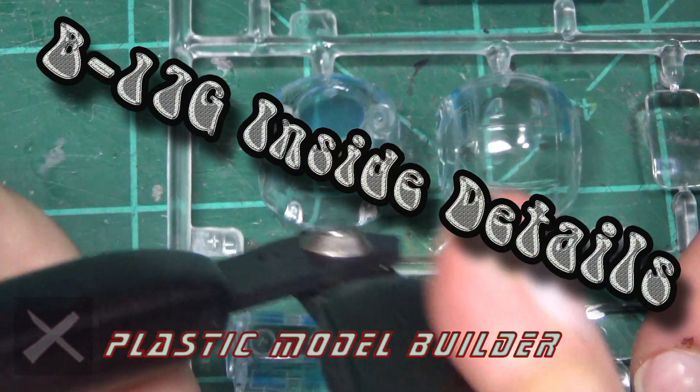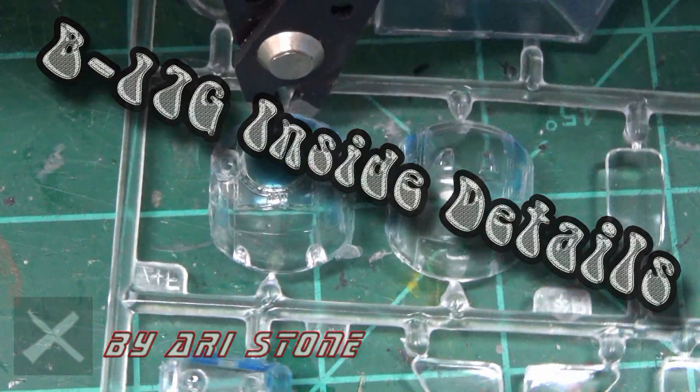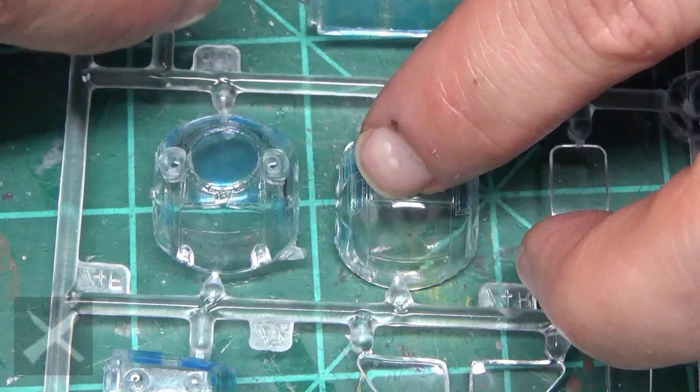Hey plastic model builders, welcome back. This is part 4 of the B-17G Flying Fortress by Revell. It's 1:48th scale.